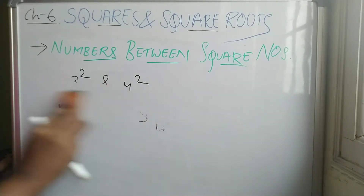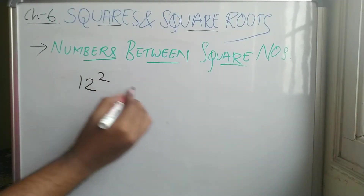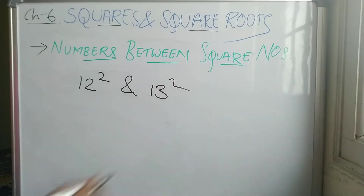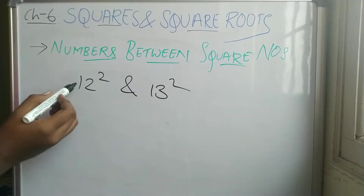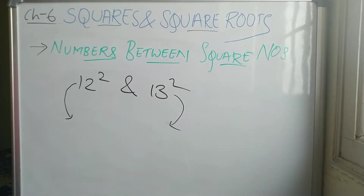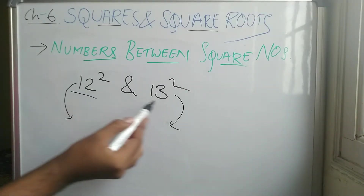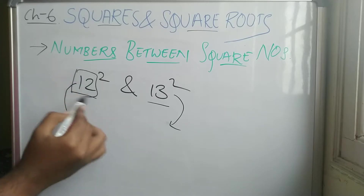Suppose the numbers given are 12 squared and 13 squared — find the numbers between them. Instead of going through that lengthy process of finding the numbers manually, you should remember this trick. The total number depends on whether it's 12 squared or 13 squared — you use 12 or 13.